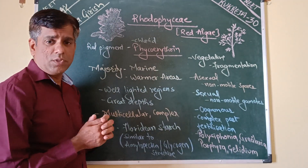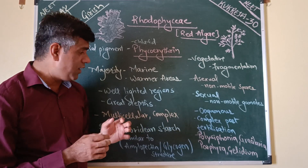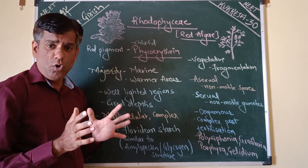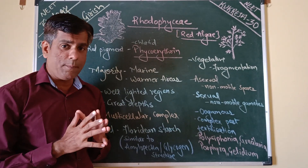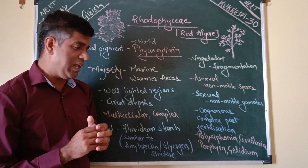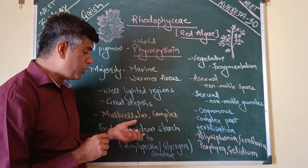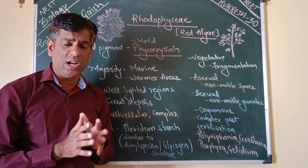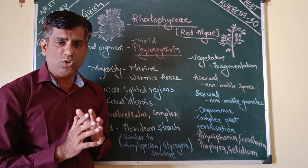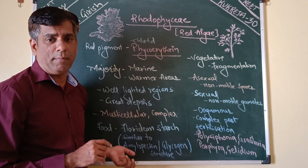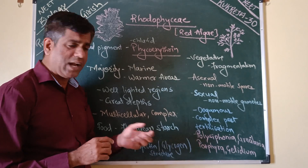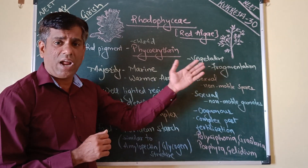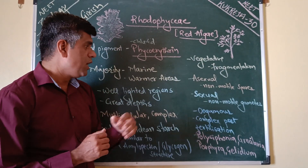Most of them are multicellular with a complex body organisation. The food stored in them is mainly in the form of Floridian starch, having a structure much similar to that of amylopectin and glycogen. Vegetative reproduction is by fragmentation.